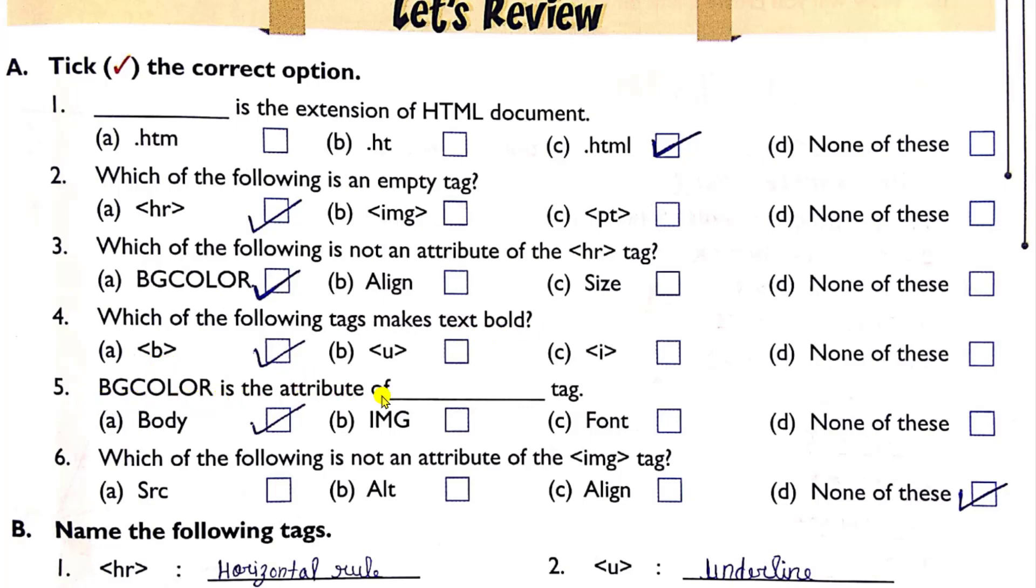Fifth, bgcolor is the attribute of dash tag. Answer is body tag. And last question is which of the following is not an attribute of IMG tag? So answer is none of these. All of these are the attributes of IMG or you can say image tag.